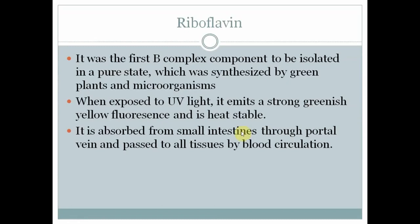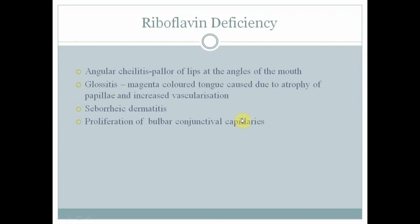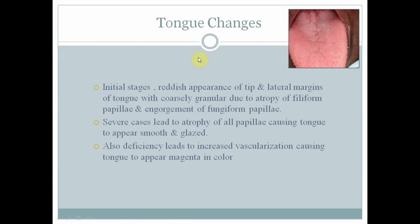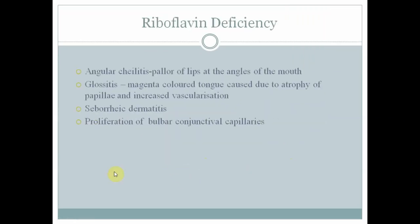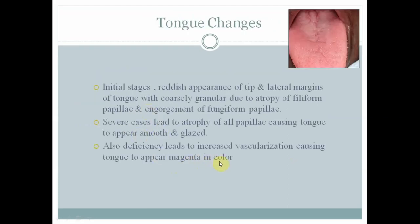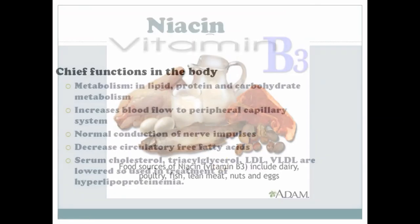Vitamin B2, riboflavin, was the first B-complex component to be isolated. Deficiency causes angular cheilitis, coloring of lips and angles of mouth, glossitis and a magenta-colored tongue — an important feature to remember. Other signs include atrophy of filiform papillae, enlargement of fungiform papillae, seborrheic dermatitis and proliferation of bulbar conjunctival capillaries. In severe cases, atrophy of all papillae causes the tongue to appear very smooth and glazed.